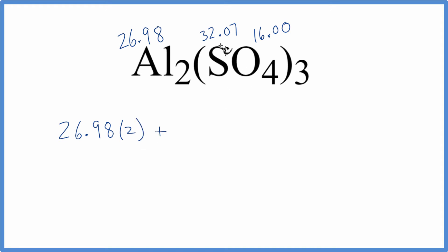We'll add to that. Let's use brackets here. 32.07 for sulfur plus 16.00. That's our oxygen, and we need to multiply that by four.